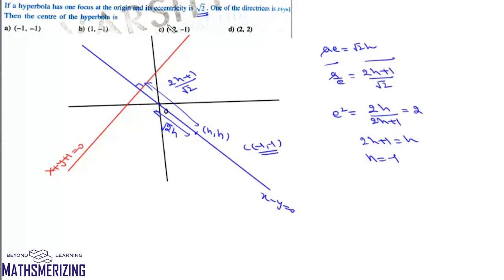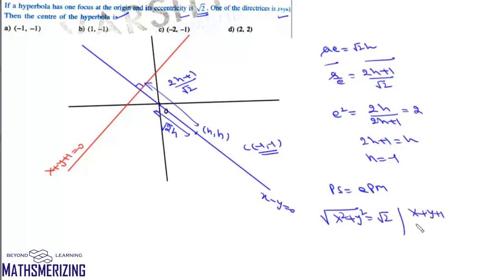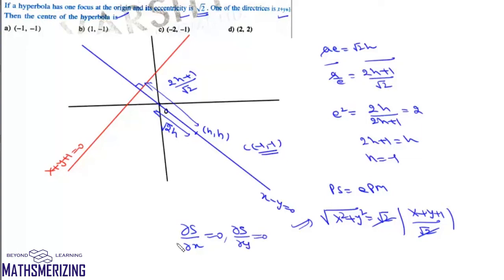An alternative method: since we have the directrix, eccentricity, and focus, use PS = e · PM. Here PS = √(x² + y²), e = √2, and PM = (x + y + 1) / √2. Squaring gives the general equation of the hyperbola. The center can then be found by partially differentiating with respect to x and y and solving the two linear equations, again yielding (-1, -1).